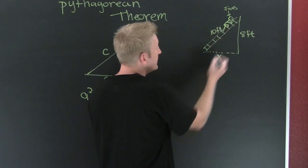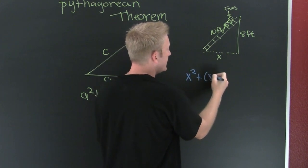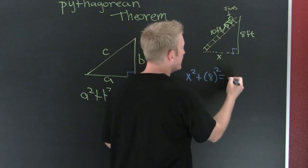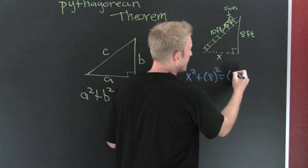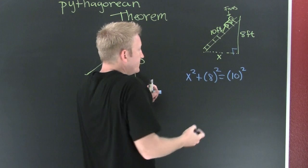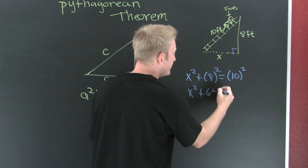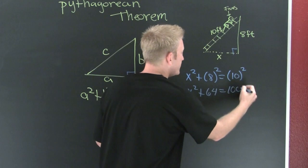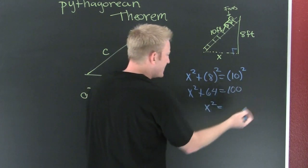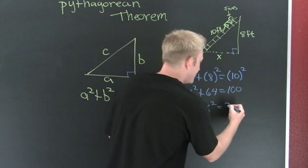So the sum of the squares of the legs of this right triangle is going to equal the square of its hypotenuse. So this is x squared plus 64 equals 100. Then I subtract 64 off each side, and that's going to be 36.